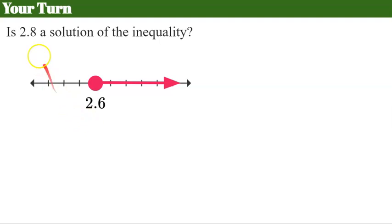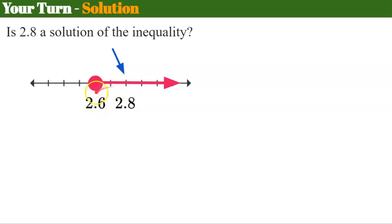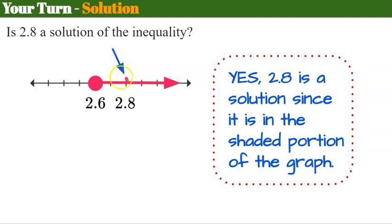Is 2.8 a solution of this inequality? Go ahead and pause and come back when you're ready. Welcome back. Let's first identify where 2.8 is on the graph. If this point is 2.6, then 2.8 is to the right of it. Regardless of how you label your number line, 2.8 will be to the right of 2.6, and therefore yes, it is in the solution set because it's in the shaded area of the graph.